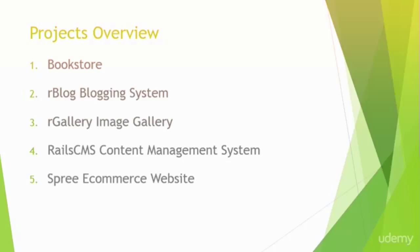So our five projects: the first is going to be a bookstore, which will have books, categories, authors, and publishers as our main resources. We'll be able to grab the books from a MySQL database and display them, and also add books, categories, authors, and publishers from the front end. We're not going to implement a login system for that particular application, just to save time. Chapter two, the rblog blogging system, will have a login or user system where they can log into the back end to create blog posts and categories.